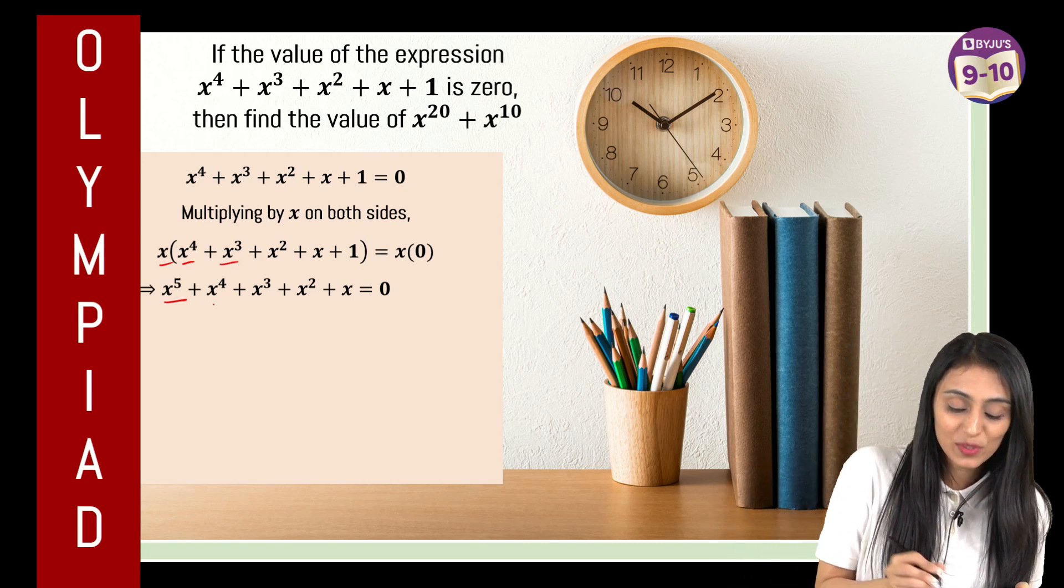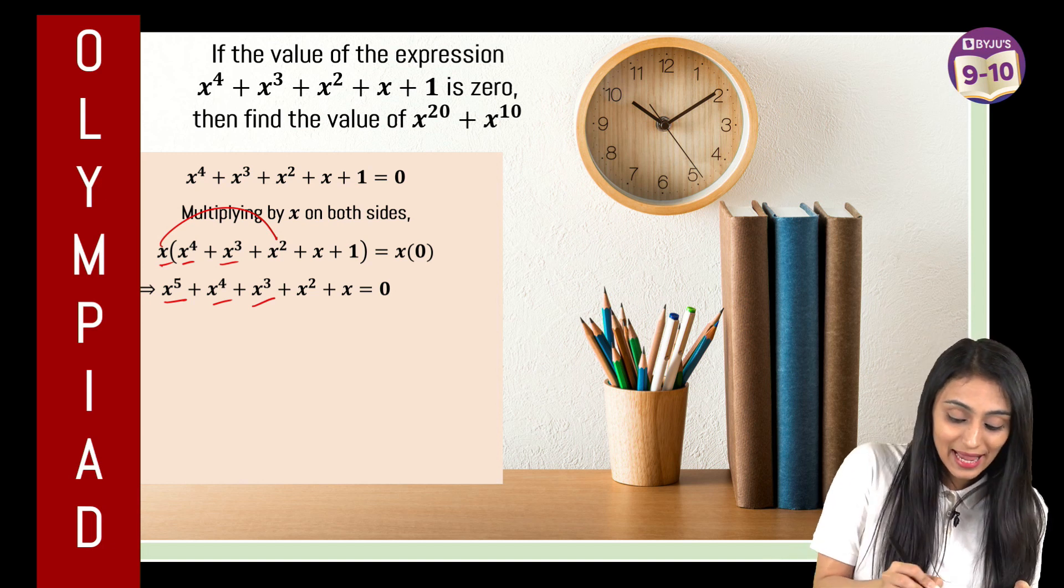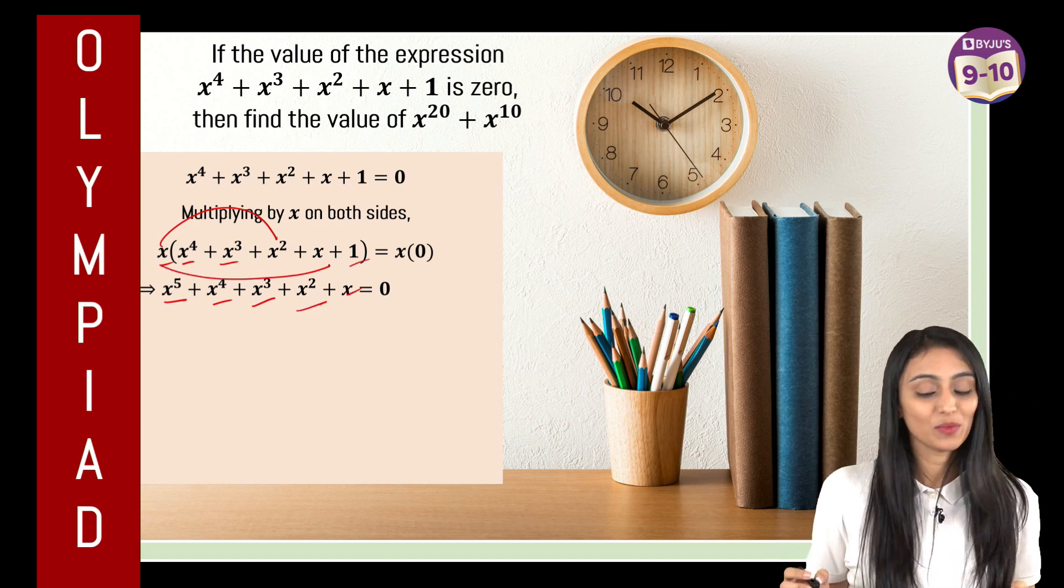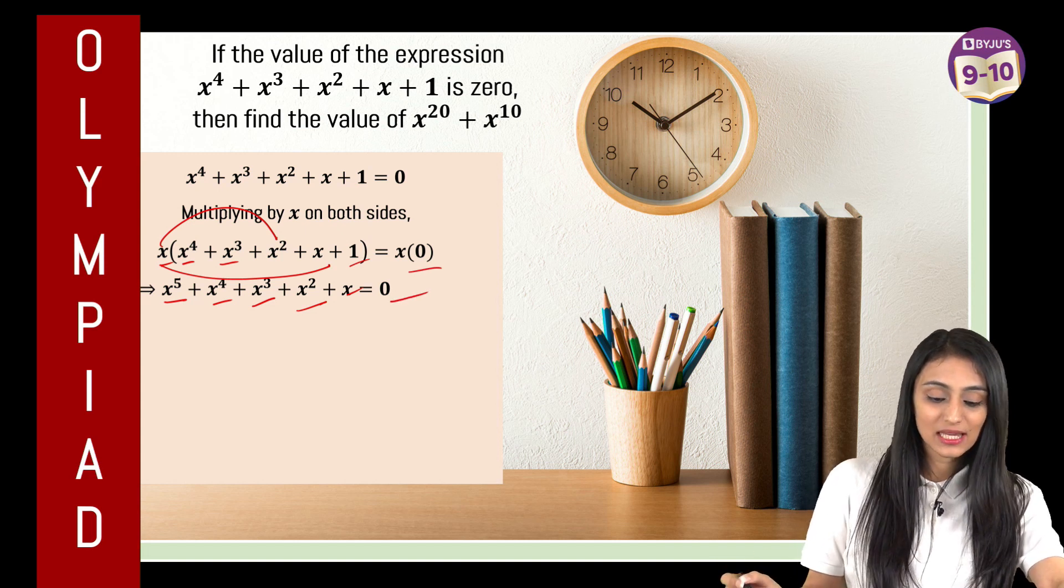And x times x cube is going to be x4, x times x square is going to be x cube and x times x is going to be x square, x times 1 is going to be x and right side is going to be 0.